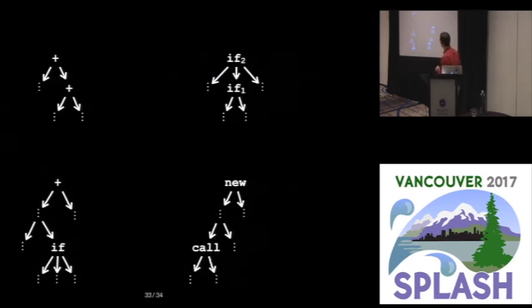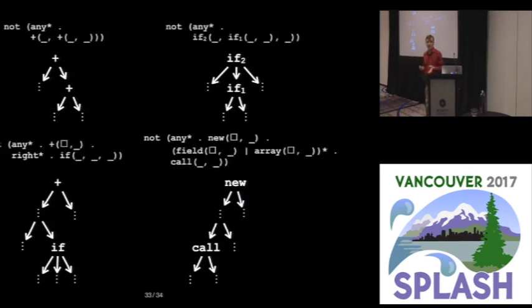So to summarize, we have a set of patterns that we want to reject. We can describe these patterns in terms of tree automata regular expressions, or there's many different ways to express tree automata, I've only shown you one here.